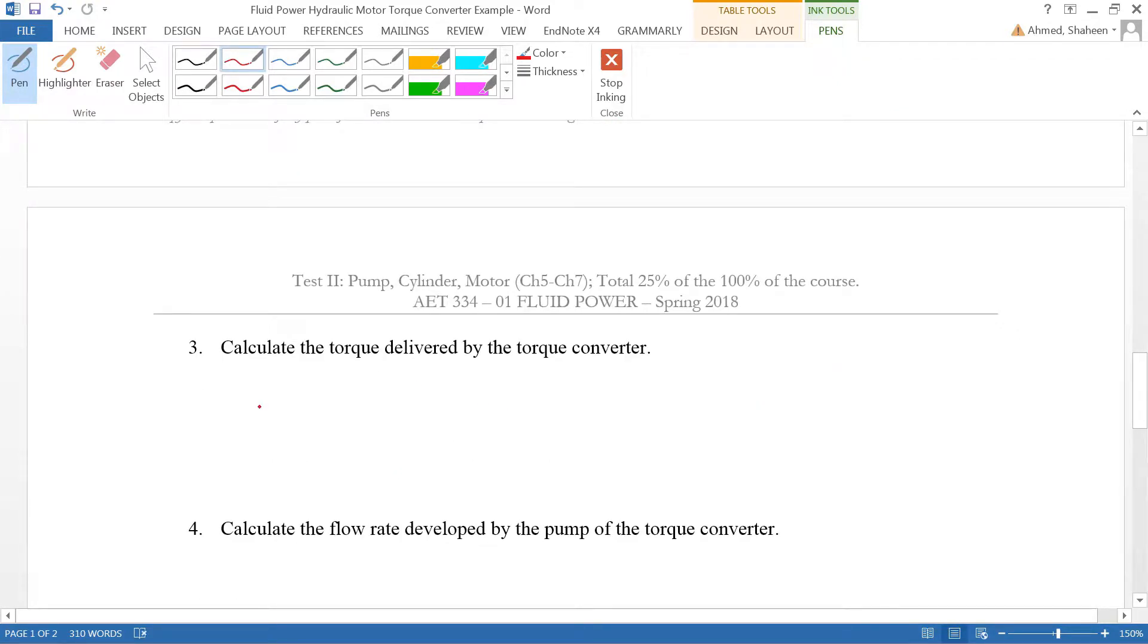We know the power so we can write this equation again: P equals T times N divided by 5252. For the power I got 44.8 from the previous question equals torque output by the converter times the RPM.